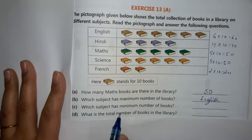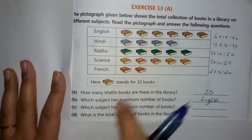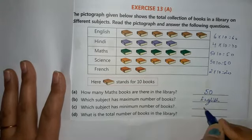Next, which subject has minimum number of books? Sabse kam books kis ki hai? French ki, which is twenty, so here we will be writing French.